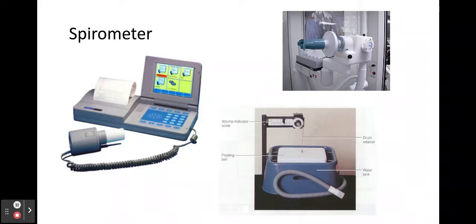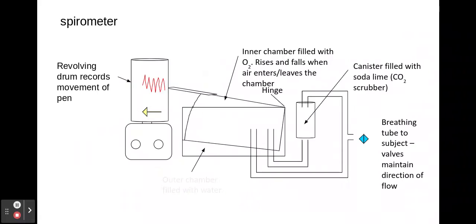Due to the carbon dioxide being absorbed by the soda lime and oxygen being used for aerobic respiration, this means that the reading generated from a spirometer will gradually decrease over time.